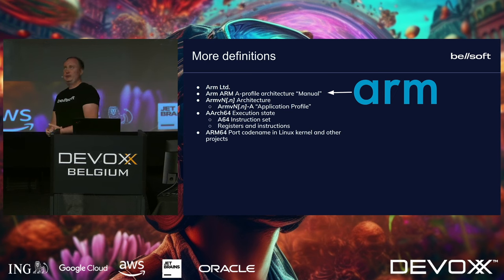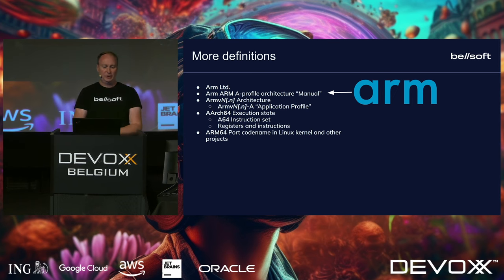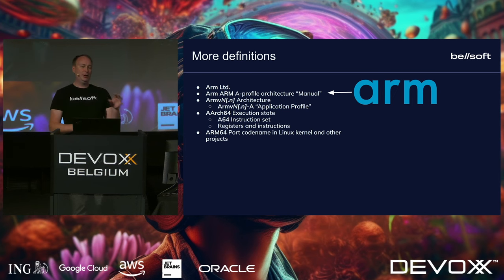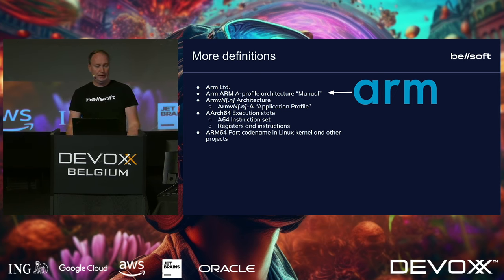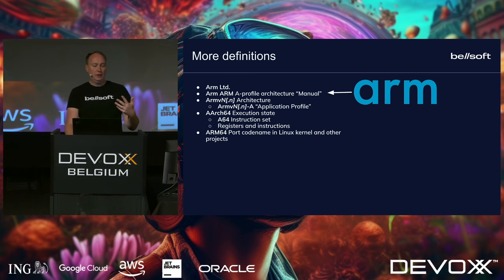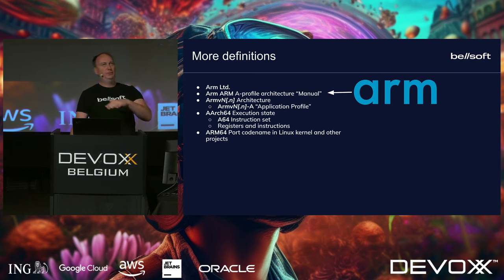For that architecture, there's a profile. For us as Java developers and people who run Java on such devices, the main profile is called the Application Profile — a set of capabilities perfectly suitable to run a JVM. There are multiple versions of the spec with that profile. The most modern and correct mode for us is the AArch64 execution mode, which gave its name to a port in OpenJDK, and it operates with the A64 instruction set.